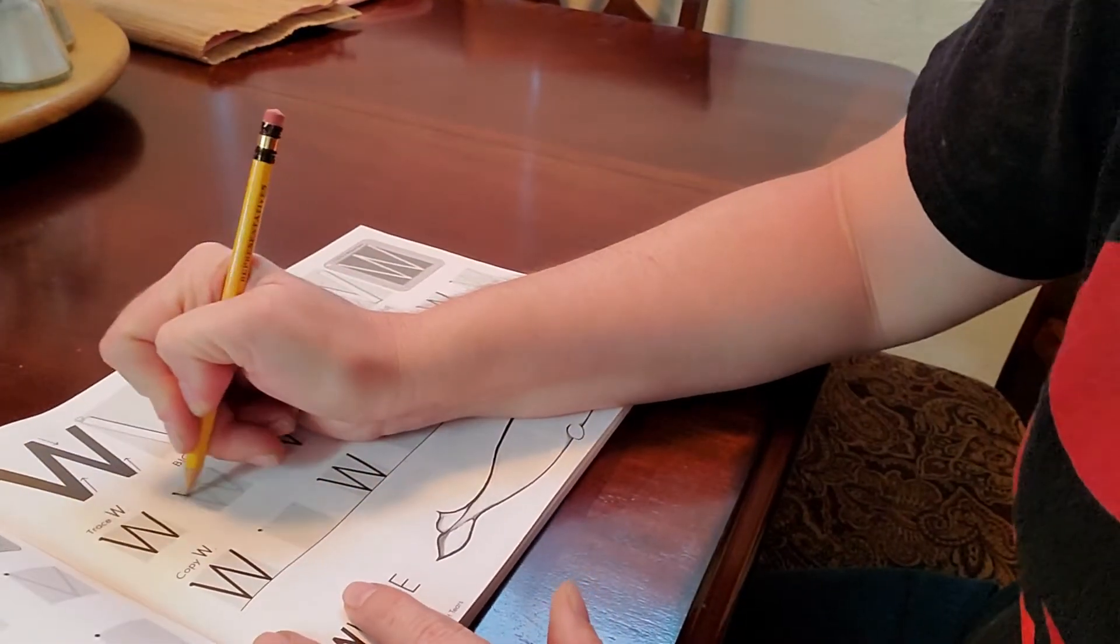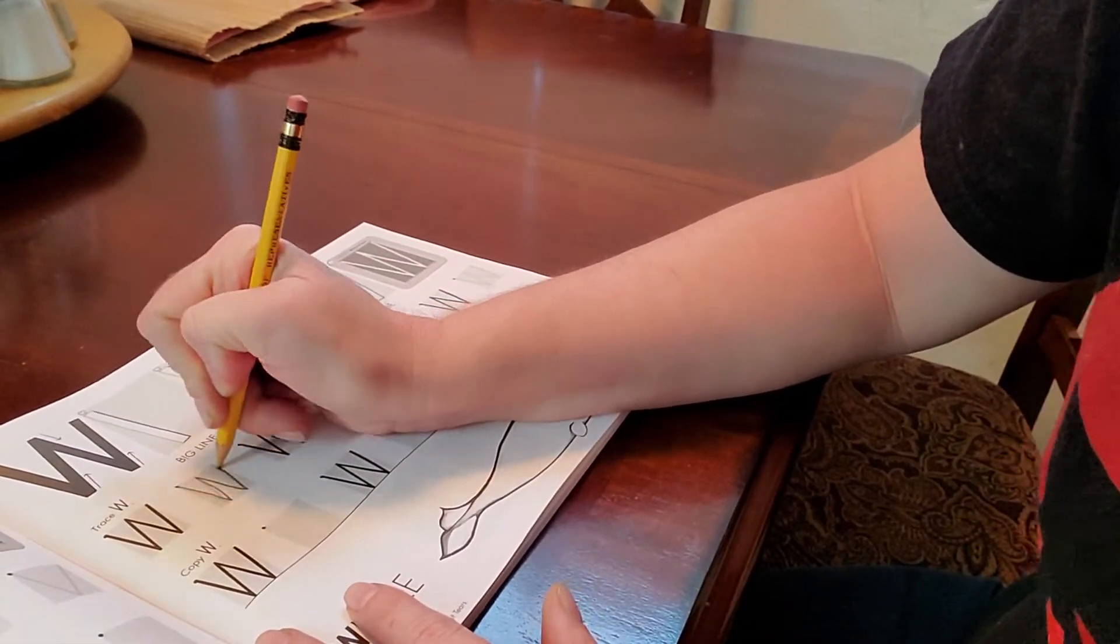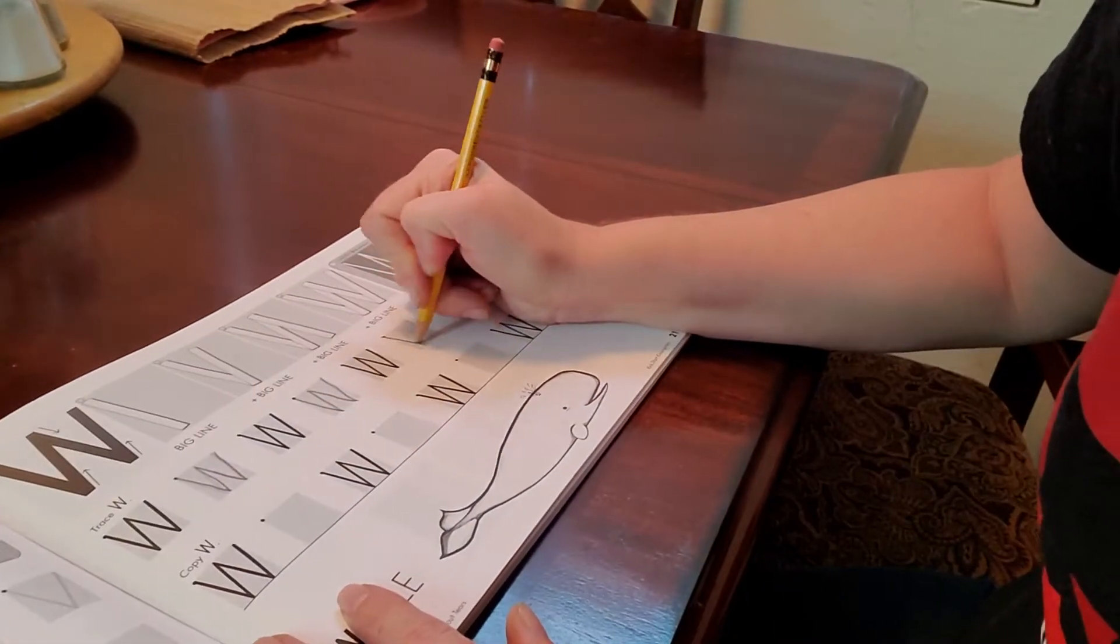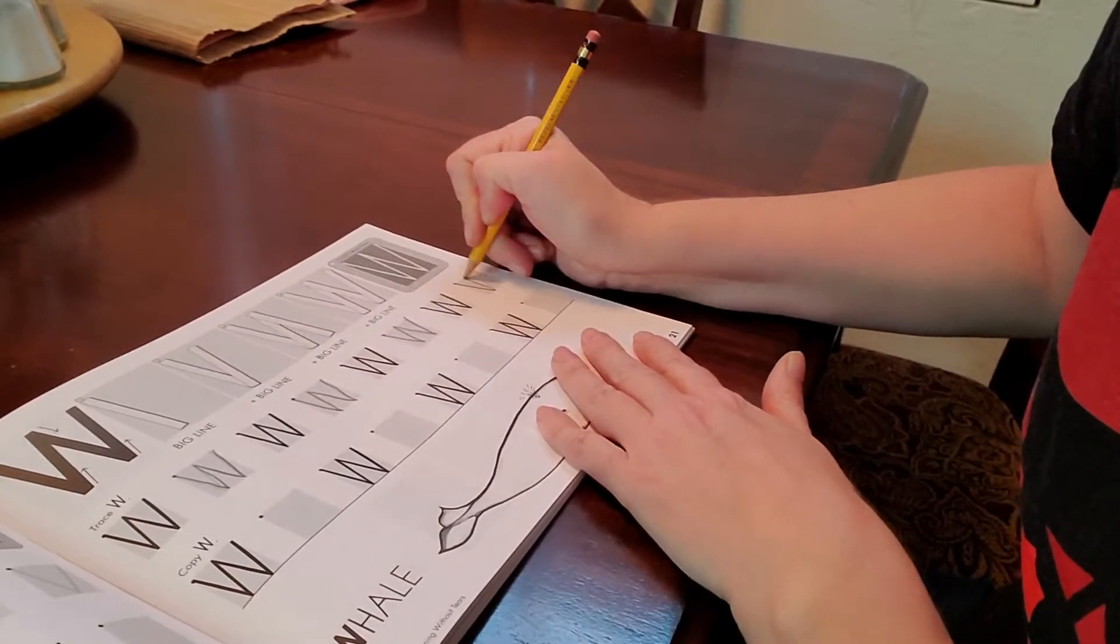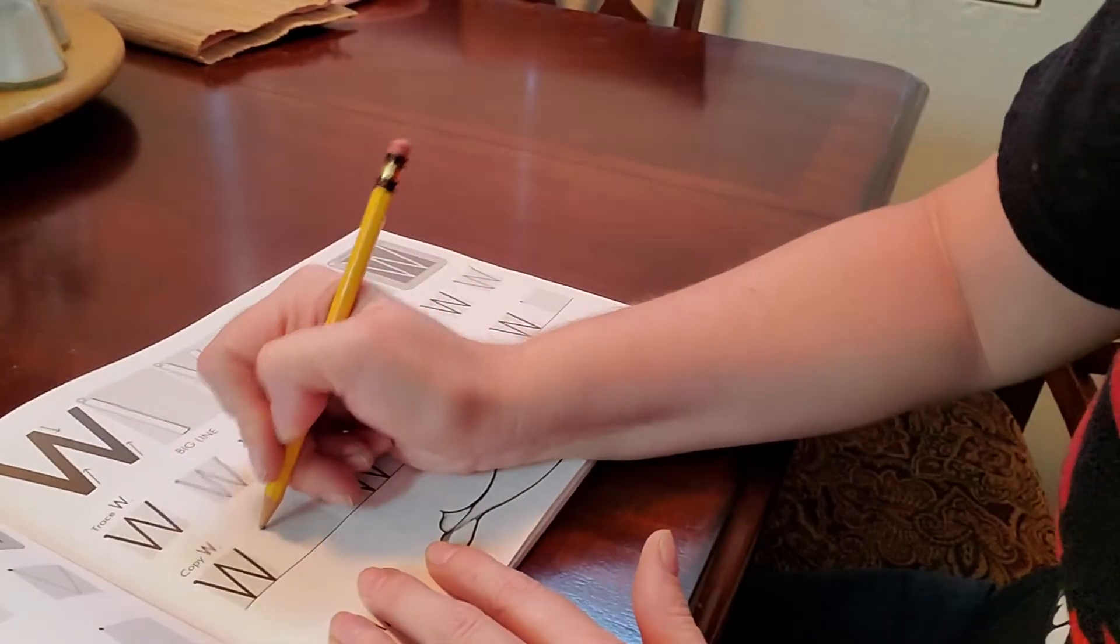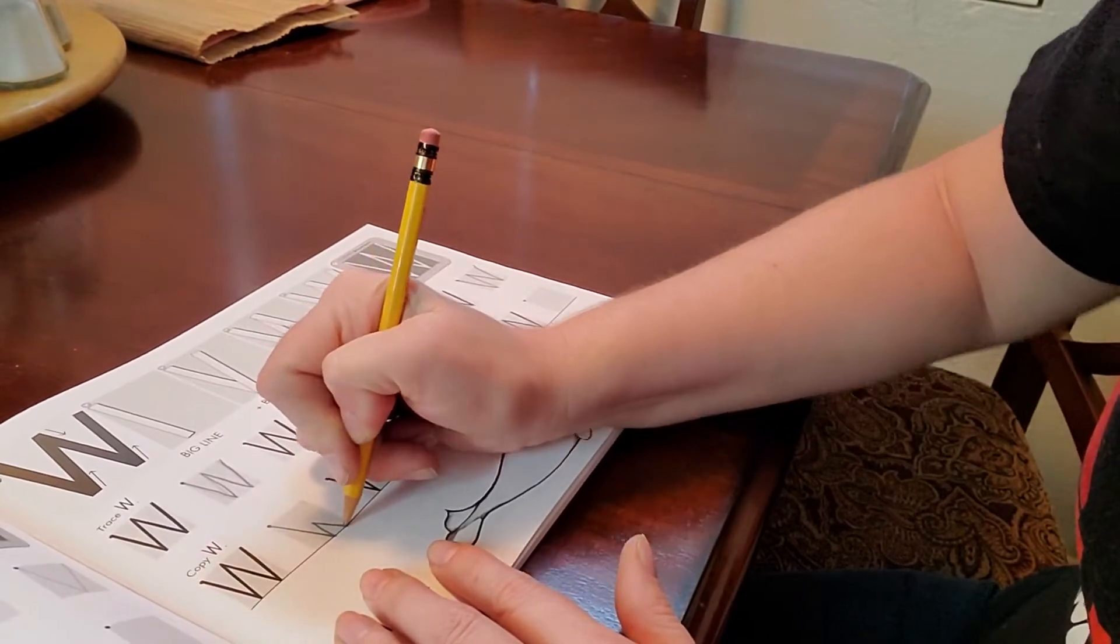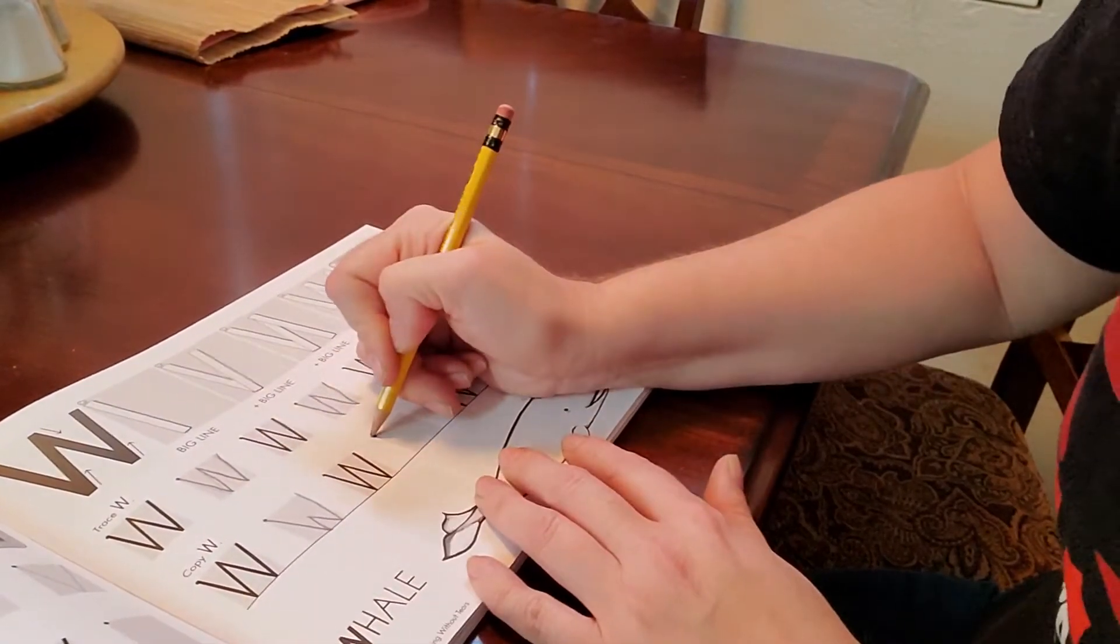We're going to trace our uppercase Ws, and then we're going to write them all by ourselves. Start at the dot, diagonal line down, diagonal line up, diagonal line down, diagonal line all the way up.